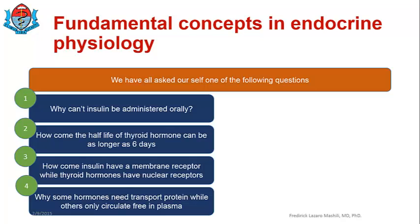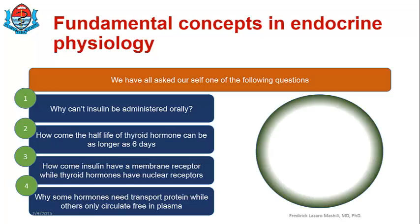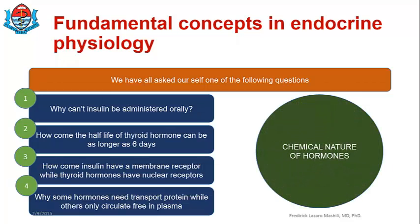So, what a student might think is that you need to understand each and every characteristic of each and every hormone. That is important but it's difficult. There is a way to simplify this, and one of the important concepts that will help you simplify this is to group the hormones based on their chemical nature.